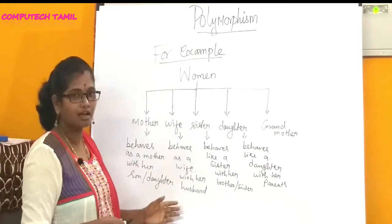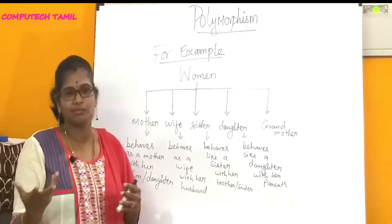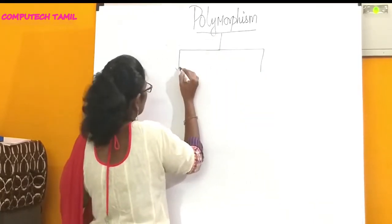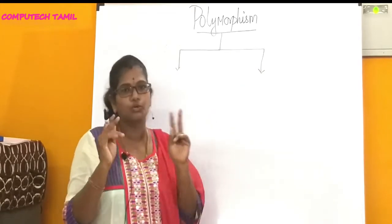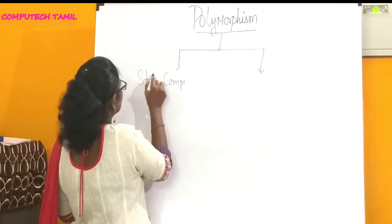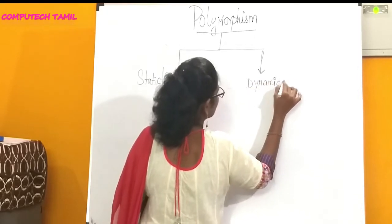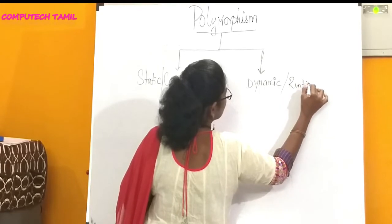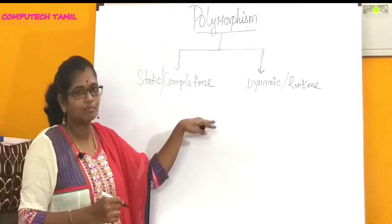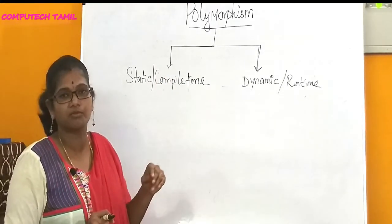So one woman has different forms. This is polymorphism — one thing can be represented in many forms. Polymorphism can be divided into two types: one is static or compile time polymorphism, and another one is dynamic or run time polymorphism.